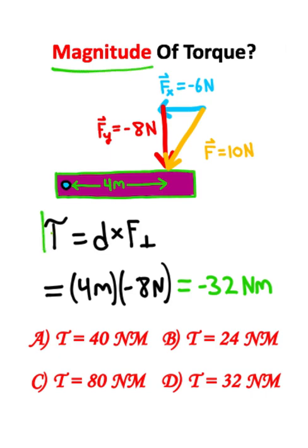Now I only care about the magnitude of the torque in this situation, so I can go ahead and get rid of this negative sign. The magnitude of the torque acting on this lever is thirty-two Newton meters.